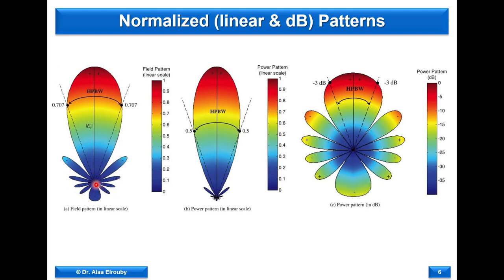Looking at the shape of a radiation pattern: we have a field pattern in linear scale and a power pattern. Both are normalized, and because power is proportional to the square of the field, and the square of a fraction is a smaller fraction, the power pattern will be thinner. The dB logarithmic scale reveals details that are hidden in the power pattern. Different representations show different details.